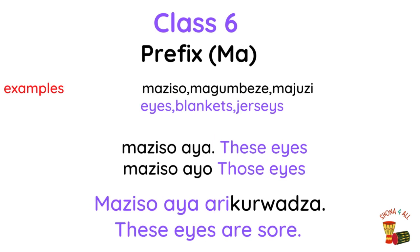Class 6, prefix ma. This class comprises the plural forms of all the nouns in class 5. Examples: maziso, makumbeze, majuzi. Example phrase: Maziso aya ariri kurwata — these eyes are sore. Maziso aya — these eyes. Maziso ayo — those eyes.